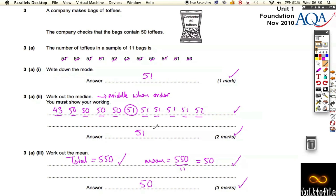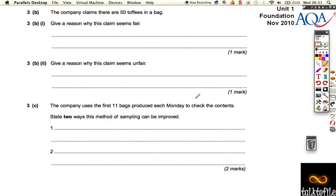So we've got the mode of 51, the median of 51, and the mean of 50. Let's look at the next bit. The company claims there are 50 toffees in a bag, given a reason why this claim seems fair.